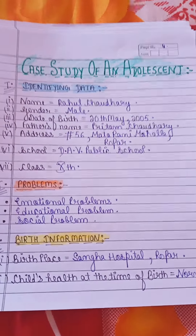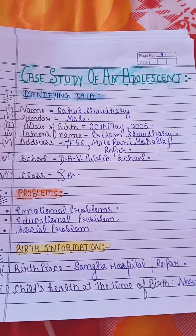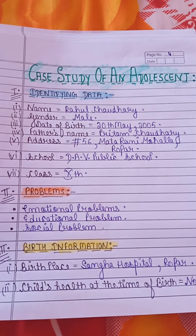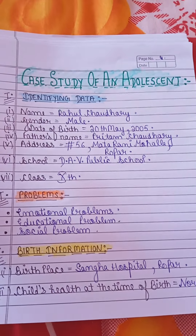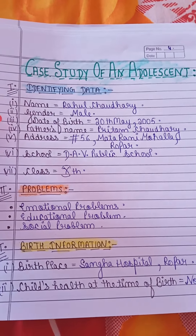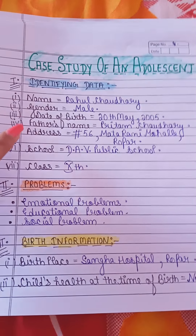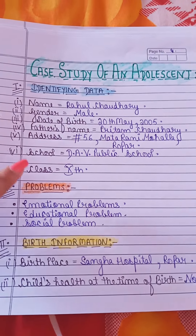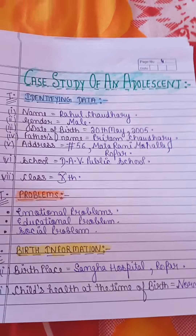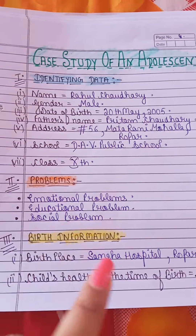Next, we will do the case study of an adolescent. We have started with identifying data. We have all the data: name, gender, date of birth, father's name, address, school, and class.